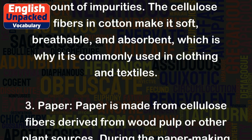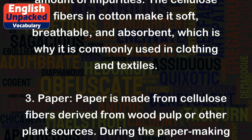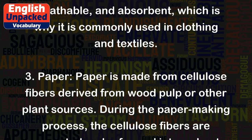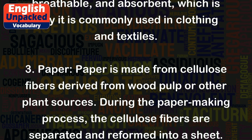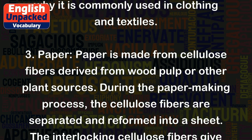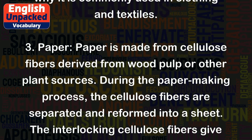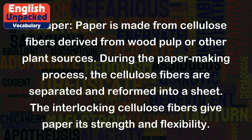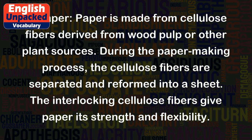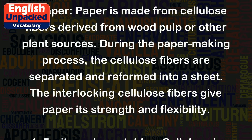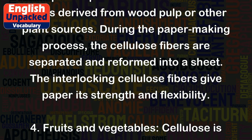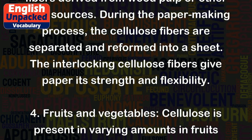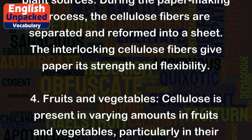Paper is made from cellulose fibers derived from wood pulp or other plant sources. During the paper making process, the cellulose fibers are separated and reformed into a sheet. The interlocking cellulose fibers give paper its strength and flexibility.